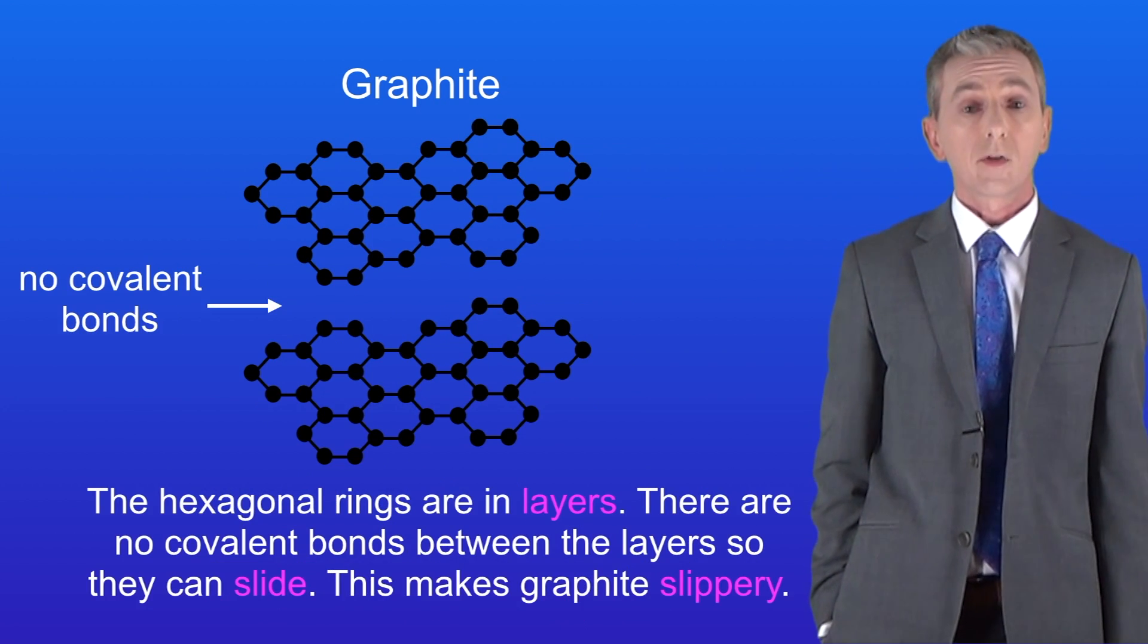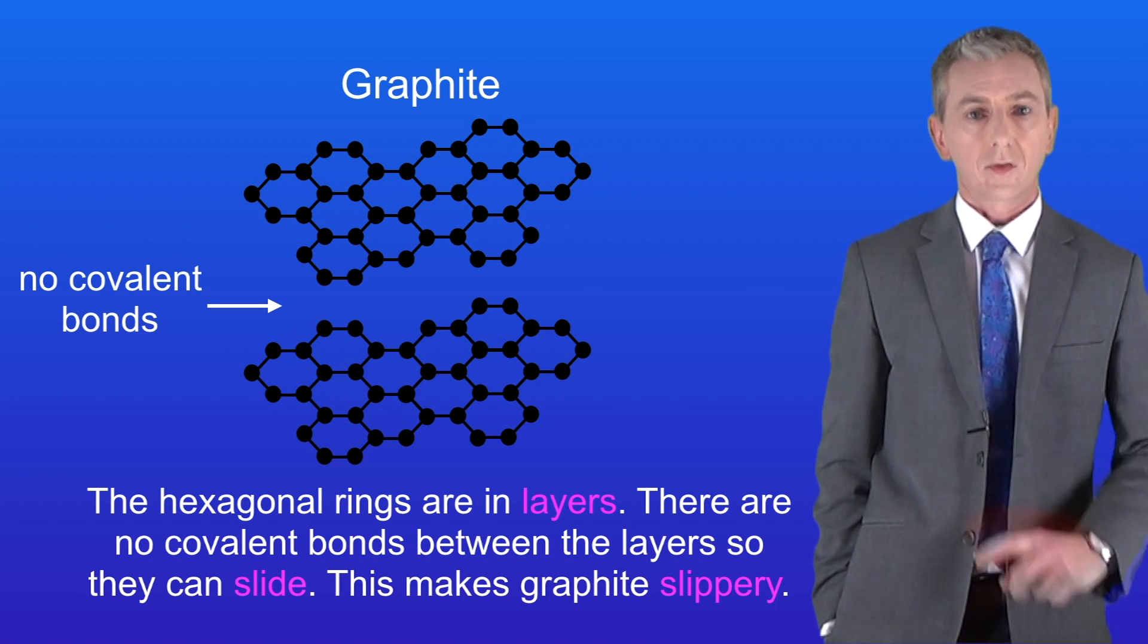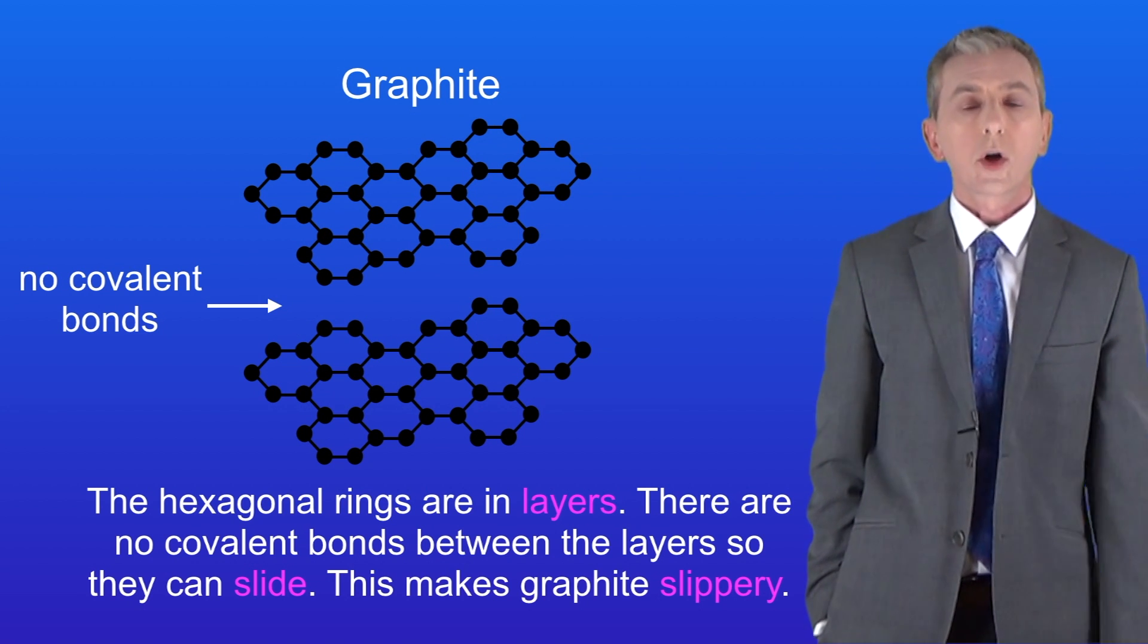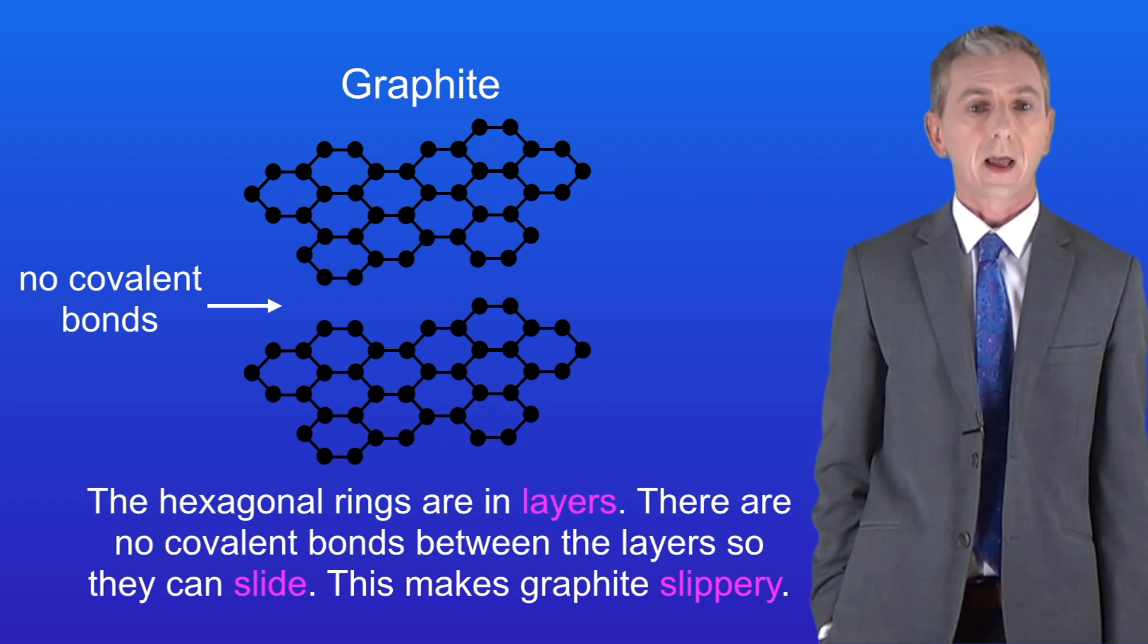The hexagonal rings of carbon atoms are arranged in layers and we can see these layers here. There are no covalent bonds between the layers so the layers can slide and this makes graphite slippery.